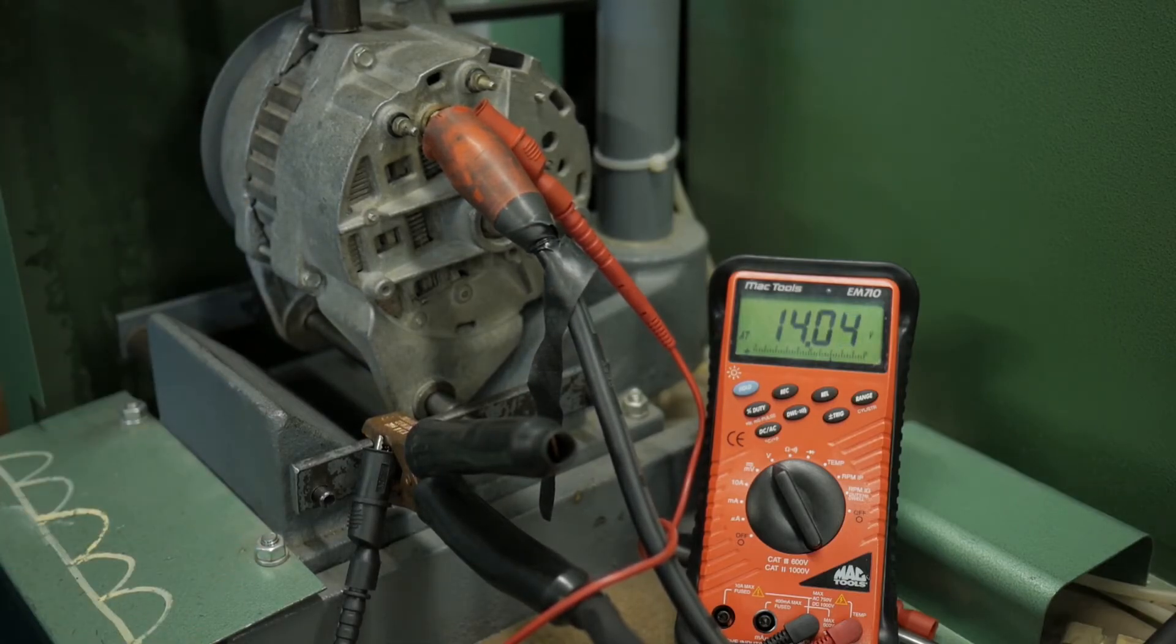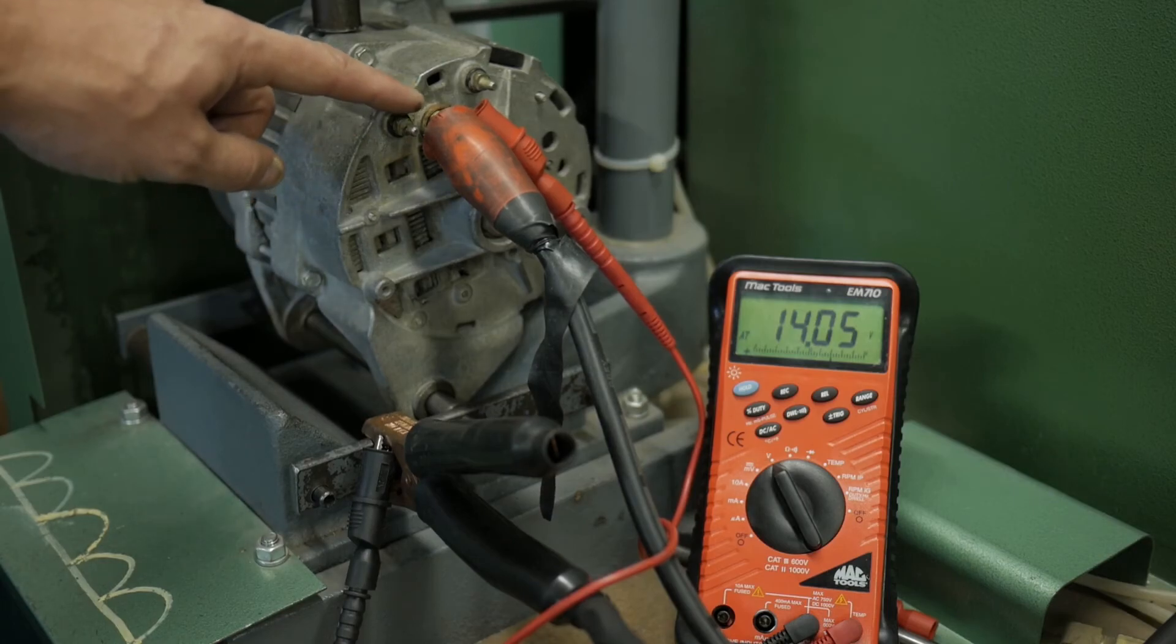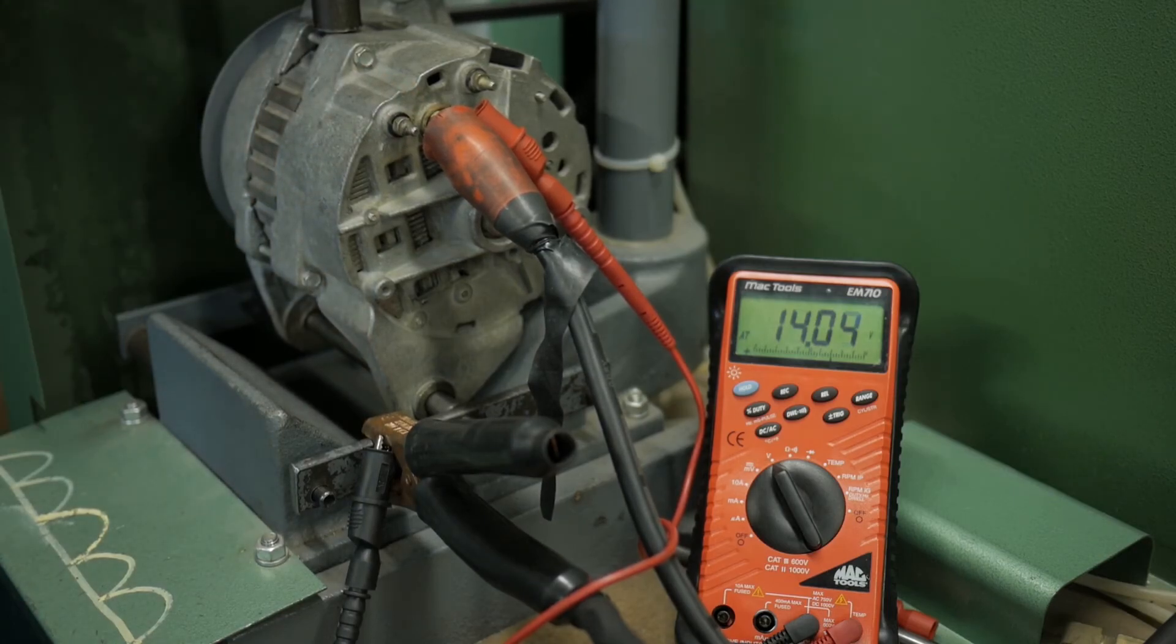As the rotor interacted with the stator, the stator was able to send it through the diode trio back into the rotor to regulate our voltage. We see that the regulator is functioning.